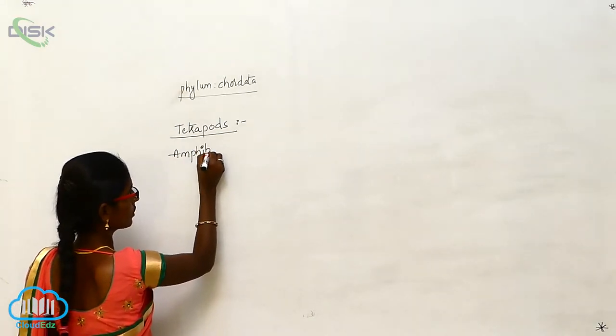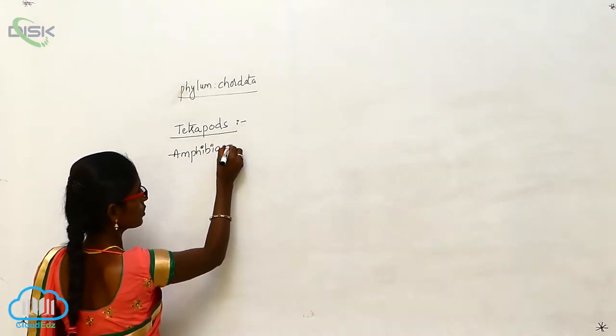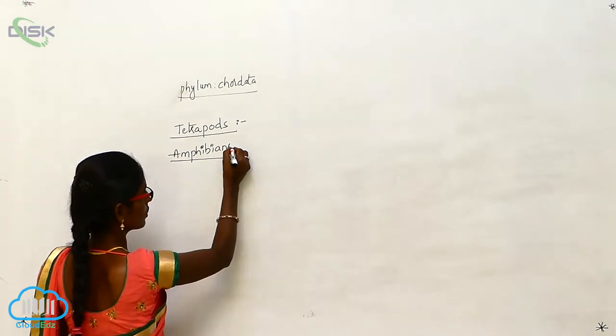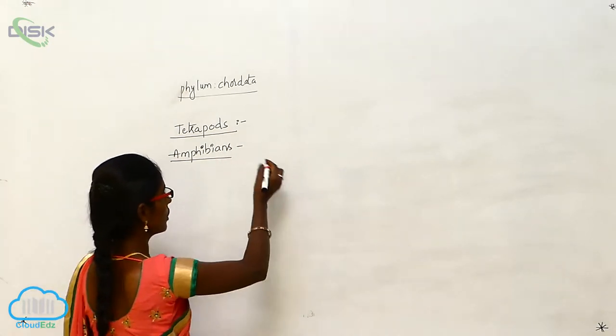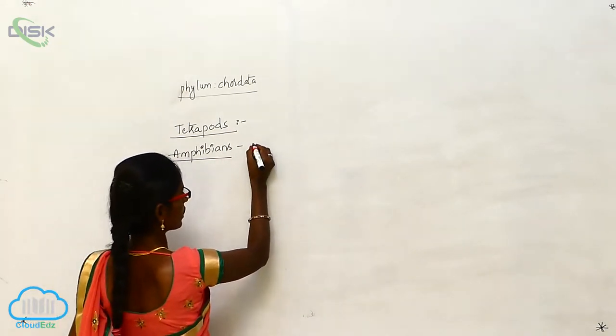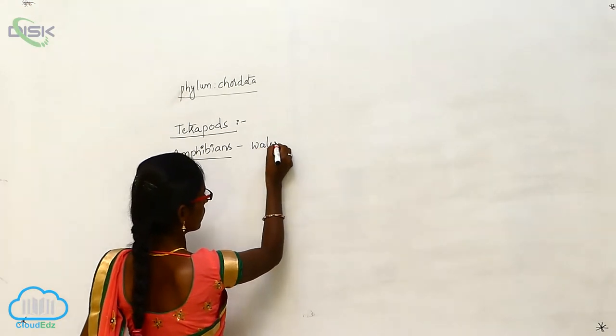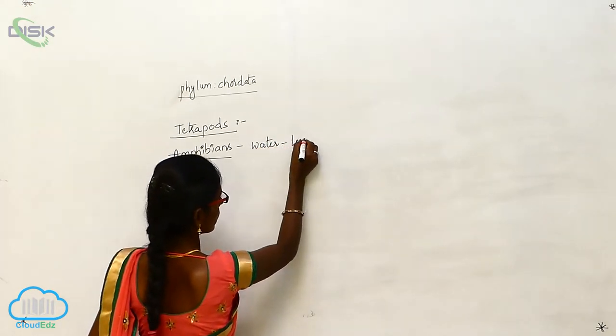Amphibians. These include amphibians. So these are present in water as well as terrestrial animals.